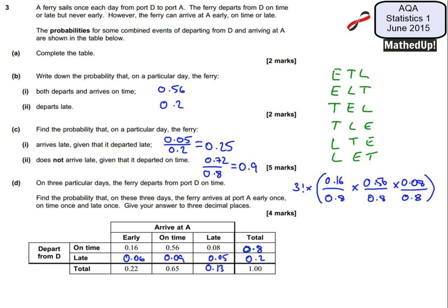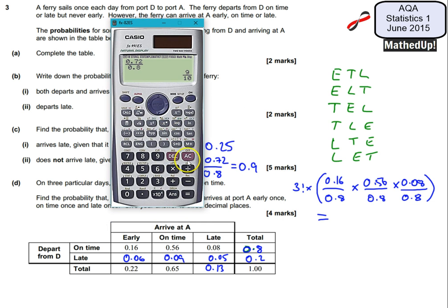So this calculation now should give me my answer for this part. So, grab my calculator, I've got, we'll do this part first, the bit inside the brackets first. So it's 0.16 over 0.8 times...